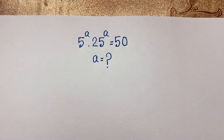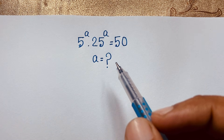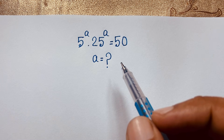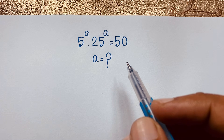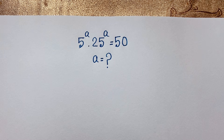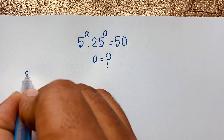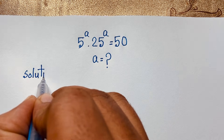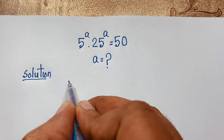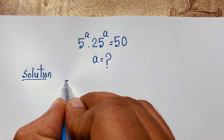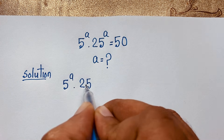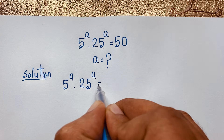Hello everyone, welcome to Russia's classroom. Today we have solved an interesting exponential math problem. It is an easy math problem. I just use logarithms and we will find out the value of 'a' in this exponential math problem. Our question is: 5 to the power a, times 25 to the power a, is equal to 50.